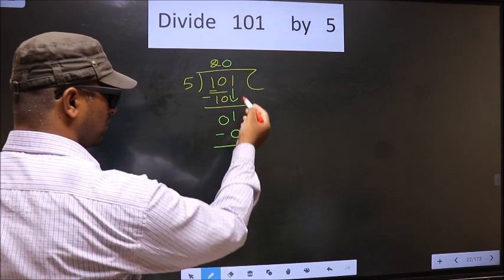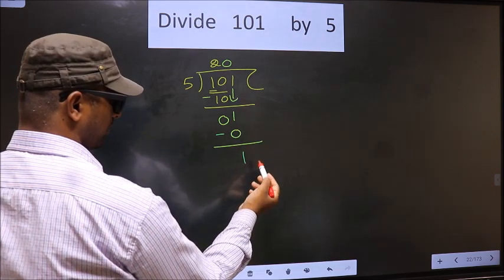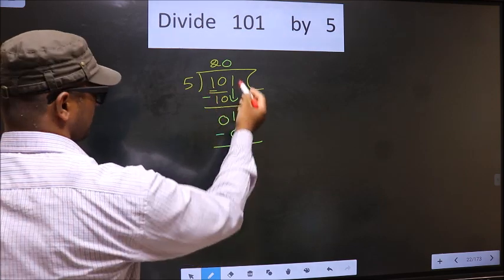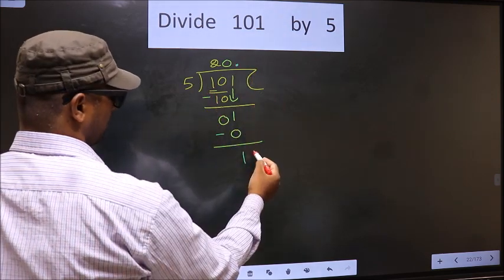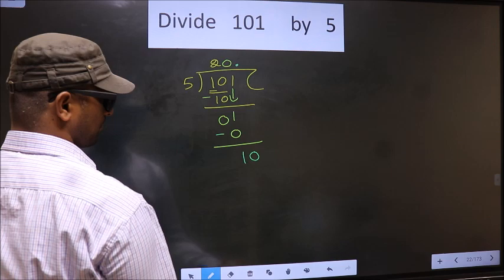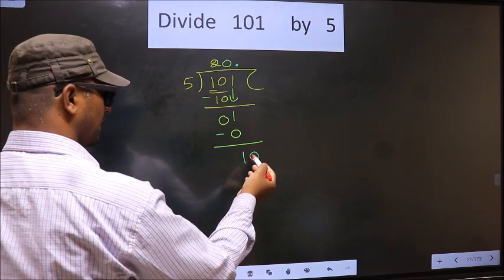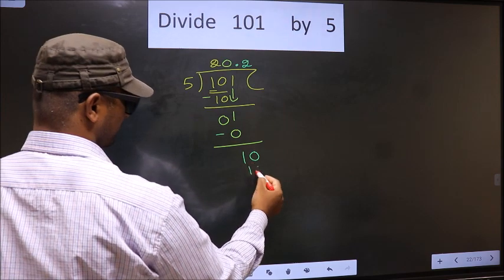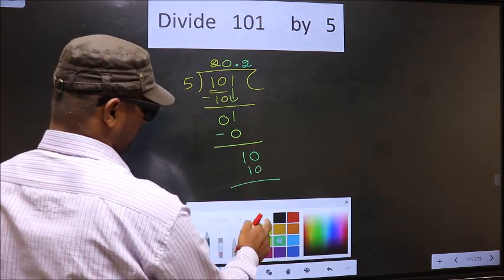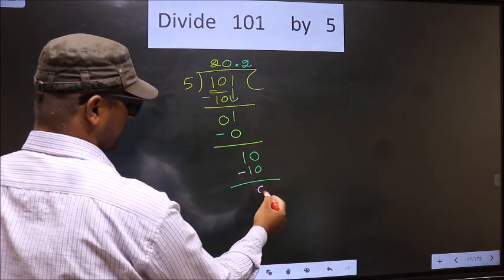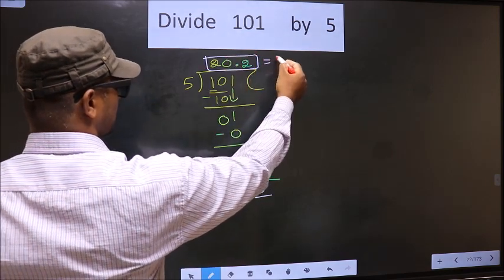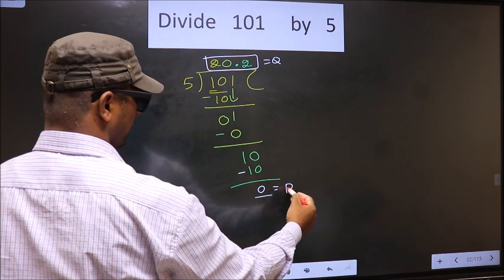Now over here, we did not bring any number down, and 1 is smaller than 5. So now you can put a dot and take 0 here. So we have 10 here. When do we get 10 in the 5 table? 5 times 2 is 10. Now you subtract: 10 minus 10, you get 0. So this is our quotient and this is our remainder.